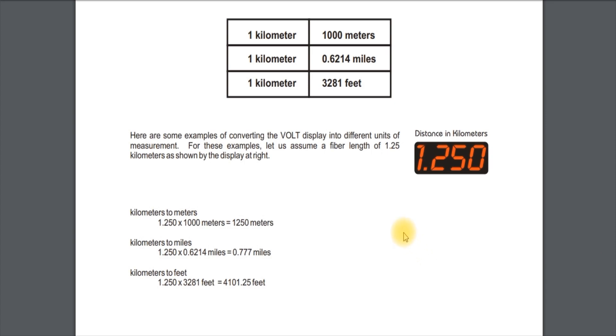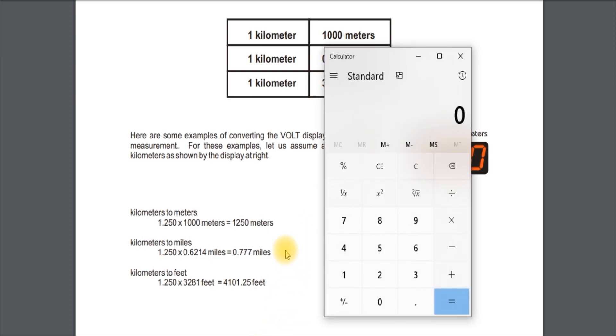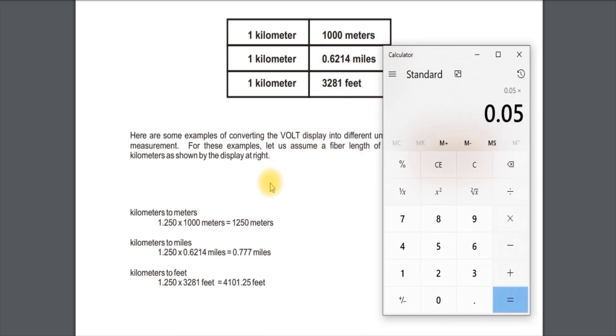So what we need to do to figure out how long our cable is, we need to take the measurement that we had, which was the distance in kilometers, .050. That's what we had. And since we're doing feet, we're going to times it by feet. So let's see here, .050 times 3281. So our tester's telling us that this cable is 164 feet, pretty much.